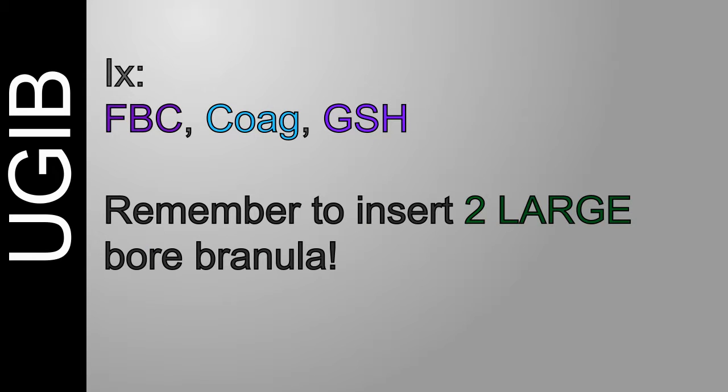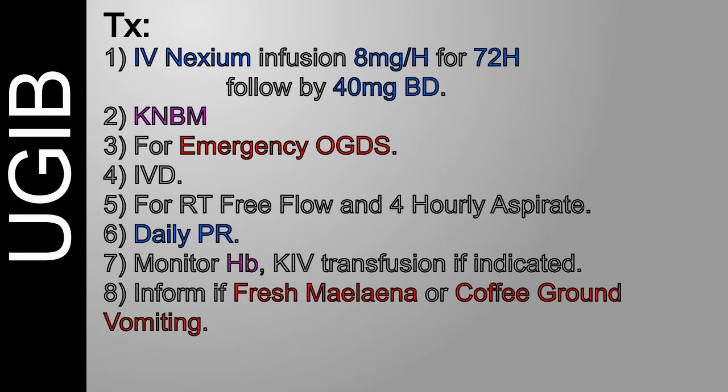For investigations, do an FBC, coagulation profile, and group and screen. Make sure the patient has two large-bore branulas. For a UGIB patient, we start IV esomeprazole (Nexium) infusion 8 mg per hour for 72 hours, followed by IV esomeprazole 40 mg BD. We can NBM the patient and plan for emergency OGD. Give the patient an IV drip, PR the patient every day, monitor BP twice per day, and consider transfusion if indicated.